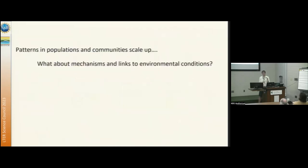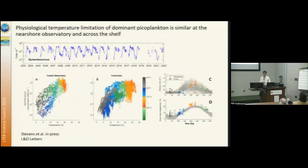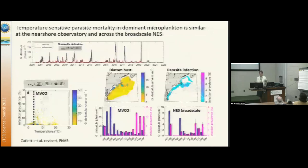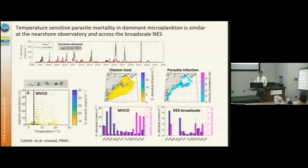We're not just describing patterns — we're also working to scale up our understanding of the mechanisms that produce those patterns. For the picocyanobacteria, Bethany's work has shown that the physiological temperature regulation known to be important in the nearshore system also applies across the entire shelf: they're physiologically limited by cold temperatures. For the diatom, we learned at the nearshore observatory that bloom dynamics are regulated by high mortality from parasites. We now know from Dylan's work that those parasites are important across the whole region, with similar seasonality of impact. Cold temperatures in winter are thought to provide a refuge from high mortality because parasitism is suppressed at that time, which is why these organisms bloom in winter.